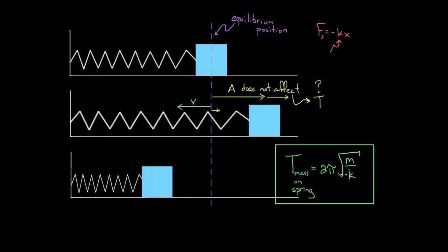The two pi is just a constant. The mass in the numerator makes sense: increasing the mass increases the period, because a larger mass has more inertia — it's more sluggish to movement and harder to whip around. If it's a small mass, you can change its direction easily. If it's a large, massive object, the spring finds it more difficult to pull it, slow it down, and speed it back up, so it takes longer to go through an entire cycle.